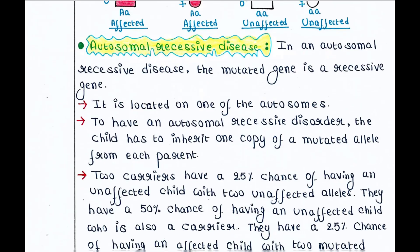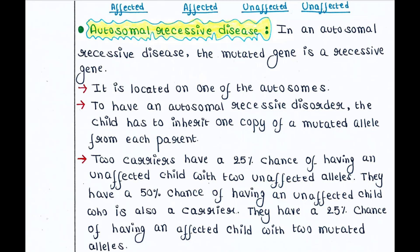Next is autosomal recessive disease. In an autosomal recessive disease, the mutated gene is a recessive gene located on one of the autosomes. To have an autosomal recessive disorder, the child has to inherit one copy of the mutated allele from each parent.